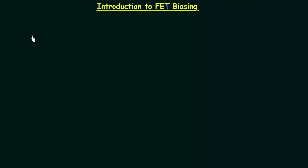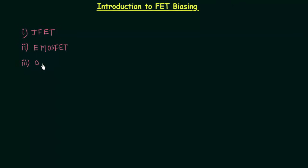We studied three types of field effect transistors in the previous chapter. The first one was junction field effect transistor (JFET), the second one was enhancement type MOSFET, and the third one was depletion type MOSFET. In this chapter we will perform the DC analysis of these three devices.